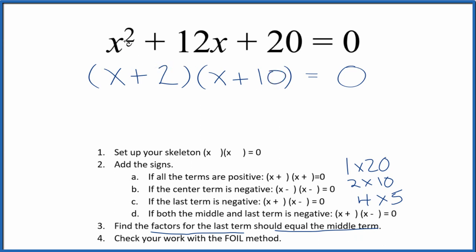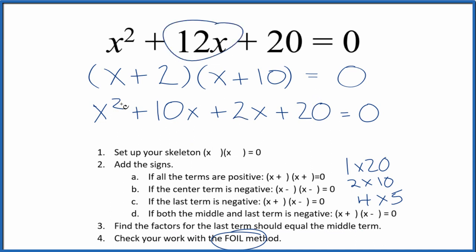We've factored the equation x squared plus 12x plus 20. We should check our work, though, with the FOIL method. We multiply the first, the outside, the inside, and then the last. And if we combine 10x plus 2x, we'll get the 12x. And we have our 20. We have x squared. This is what we started with. So we've correctly factored x squared plus 12x plus 20.